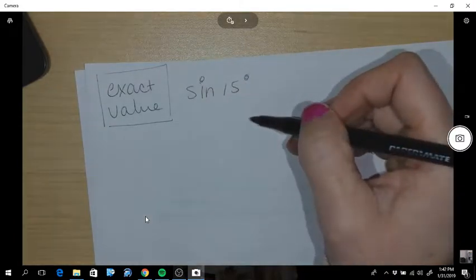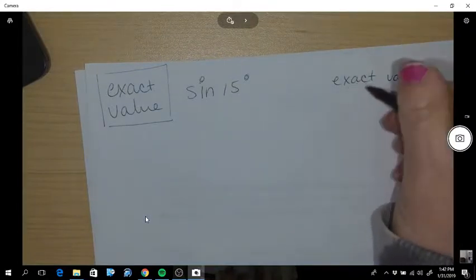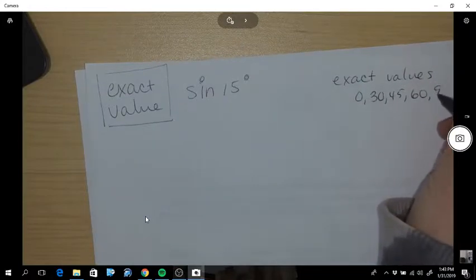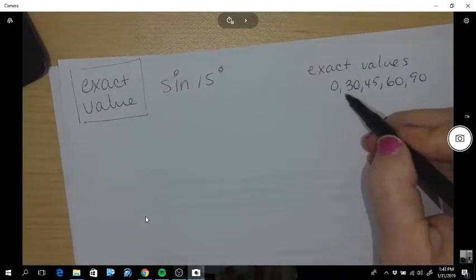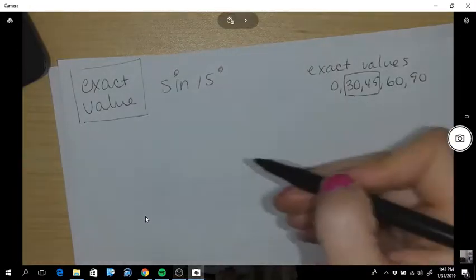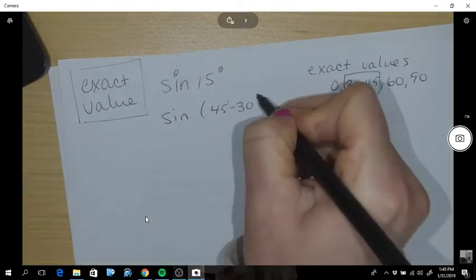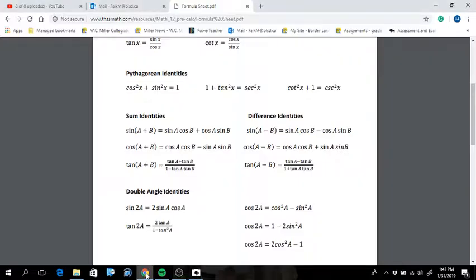We know exact values of angles such as 0, 30, 45, 60, and 90, those increments. So we're going to use those two numbers to get our 15. This is like saying it's the sine of 45 subtract 30 degrees. Then looking at our formula sheet you'll find the sine of A minus B.